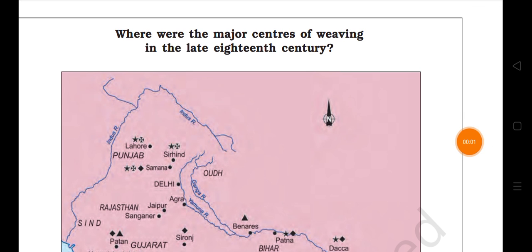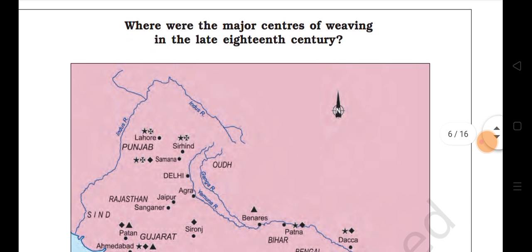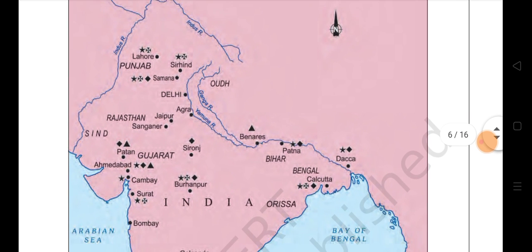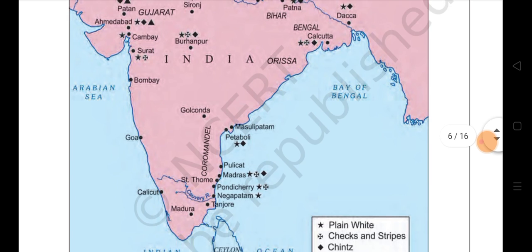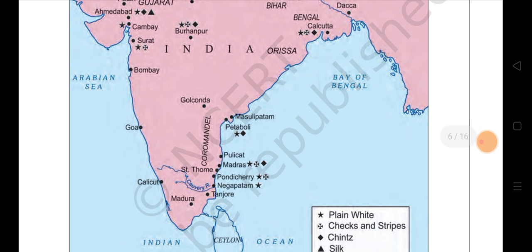Where were the major centers of weaving in the late 18th century? In India we can see: Lahore, Sirhind, Delhi, Agra, Jaipur, Burhanpur, Surat, Bombay, Golconda, Kolkata, Patna, Goa, Calicut, Madura, Tanjore, Madras — all these centers were important for the weaving industry.